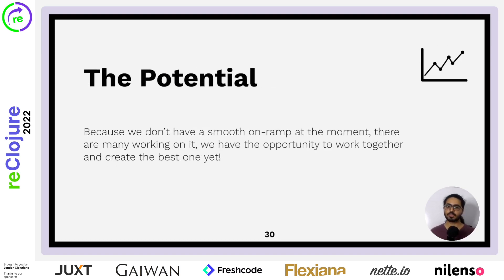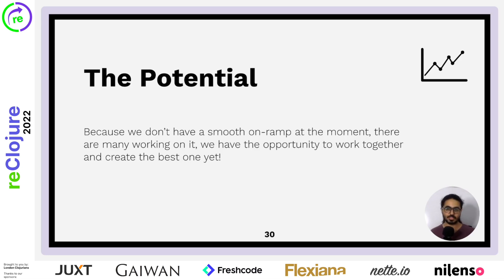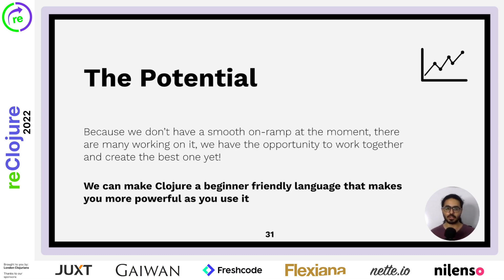And I think this gives Clojure a lot of potential. We don't have the most smooth on-ramp at the moment. There are many people working on it, writing documentation, making examples. A couple of weeks ago, I was talking with a member of the Clojurians community — they're also working on things, and that's amazing. We have this opportunity to work together and create the best beginner experience yet. Other languages — well, they have Python. And their beginner experience is mostly set in stone. Ours isn't. We can make that. We can have Clojure be a beginner-friendly language that makes you more powerful as you use it. One of the things I kept reading is that Clojure improves the way a programmer thinks. I want that. I want to see people become better because of using Clojure. There's a lot of value in that and I really believe in it.